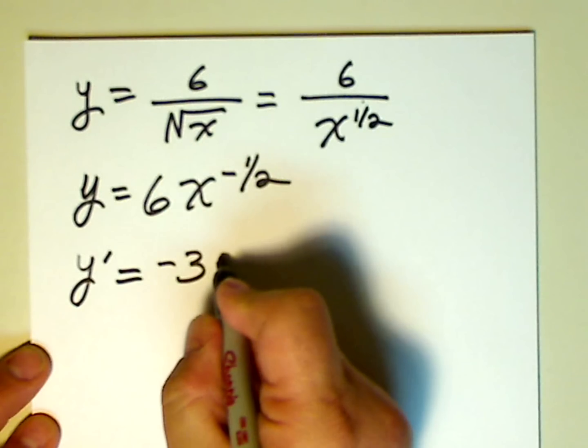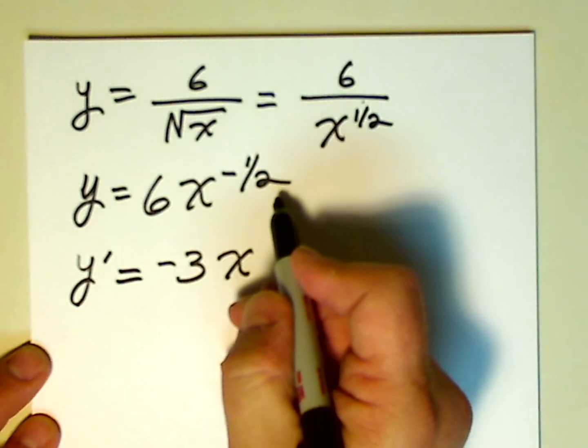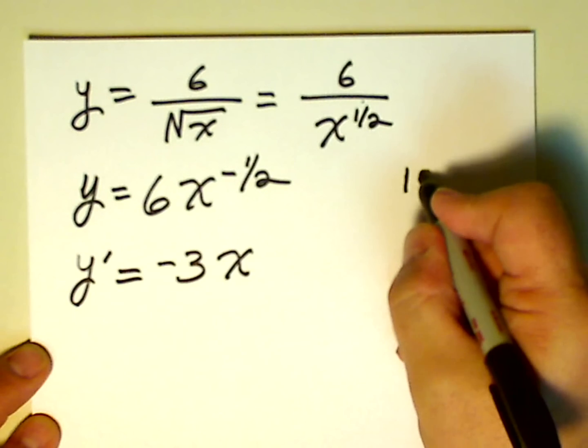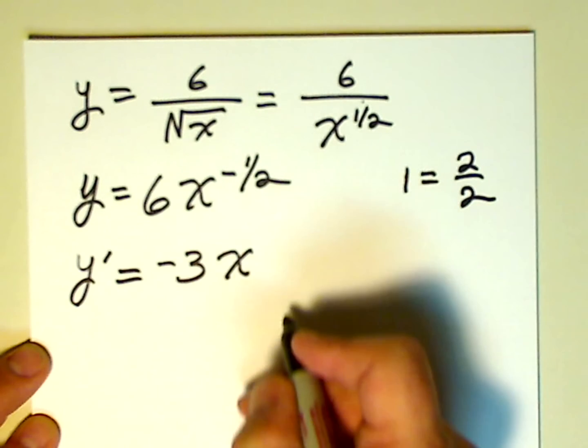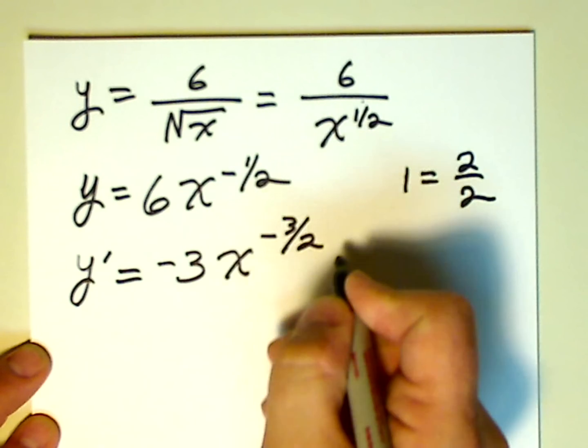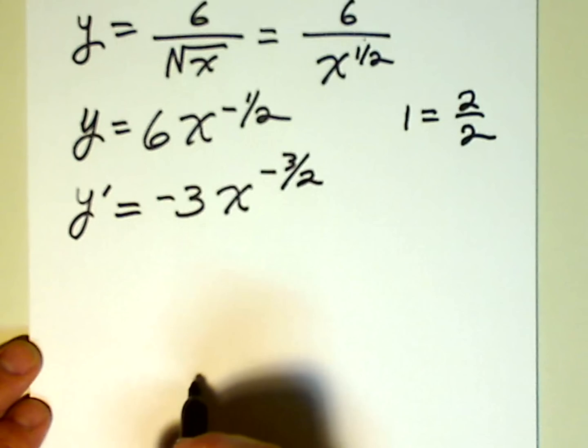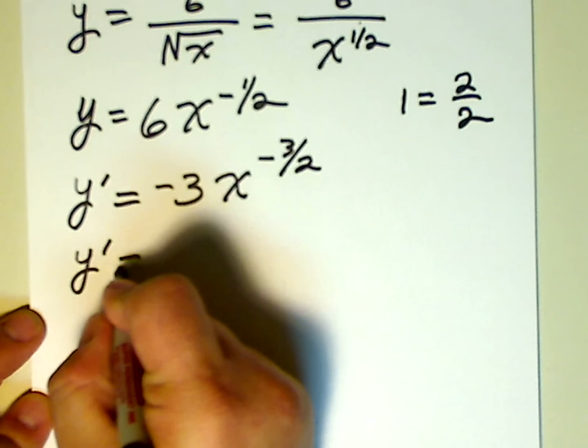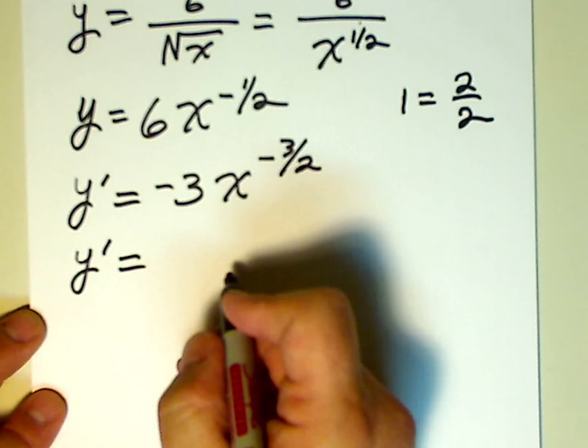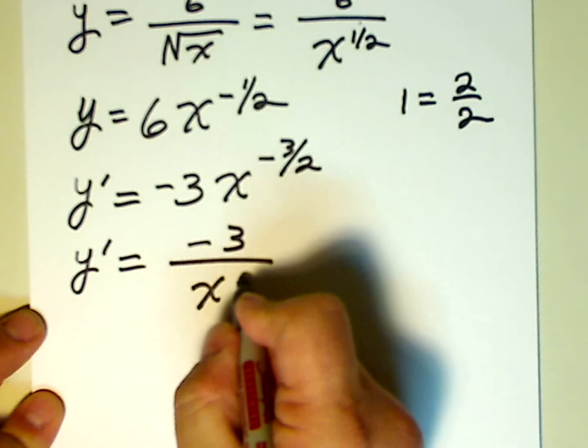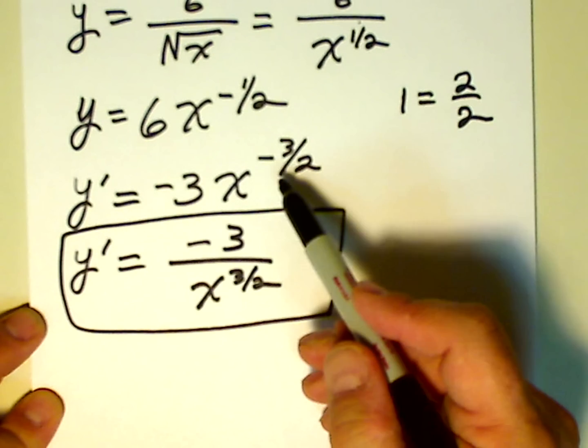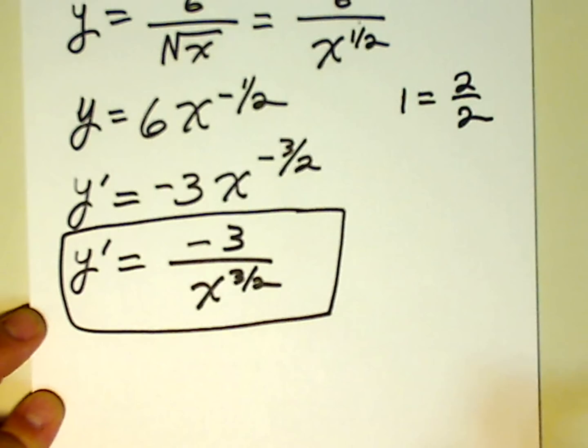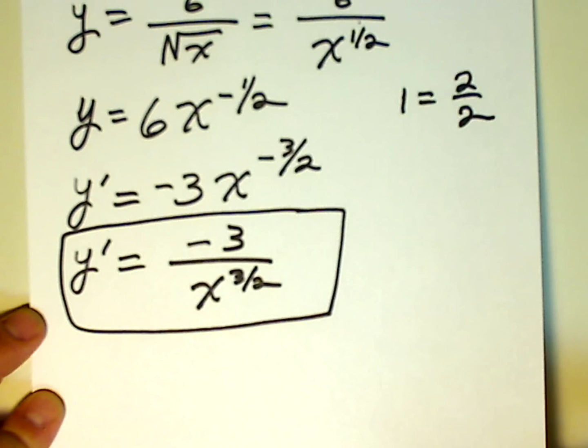So let's differentiate this fellow. Negative 1 half times 6 is negative 3x. Negative 1 half minus 1, well, 1 can be rewritten as 2 over 2. So negative 1 half minus 2 over 2 is negative 3 over 2. And there's our solution, our answer. We can write it in a little bit nicer form, maybe. Negative 3 over x to the 3 halves. So there's this one. The fact that it's a fractional exponent up here is irrelevant.